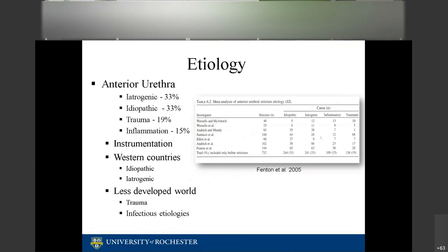The etiology of urethral stricture disease is still poorly understood. About 33% of anterior urethral strictures are iatrogenic, 33% are idiopathic, about 20% are traumatic, and 15% are inflammatory. In westernized countries, most are idiopathic or iatrogenic from instrumentation and cystoscopies. In less developed areas, traumatic or infectious etiologies are more common.